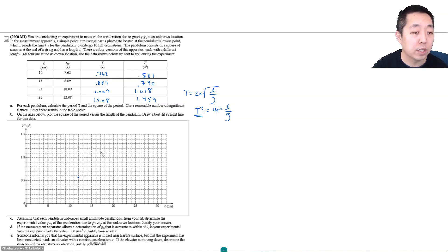At 18 cm, T² is 0.790, so I find 18 on the x-axis, then go up to 0.79, almost 0.8, so I'll put it just underneath there. At 21 cm, the height is 1.018, so 1.01 is barely above 1, right about there. And at 32 cm it's 1.459, about halfway between 1.4 and 1.5.